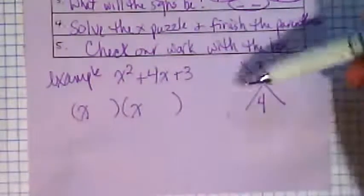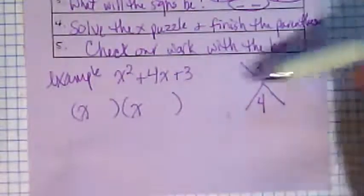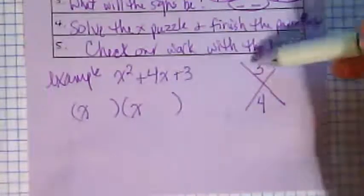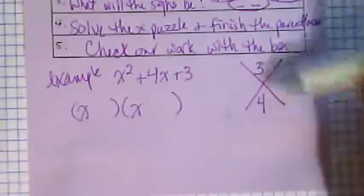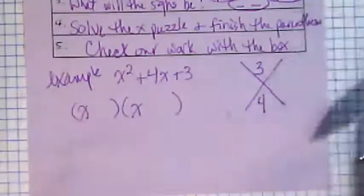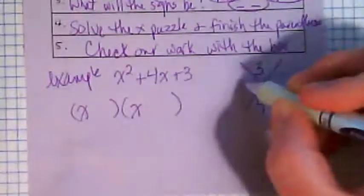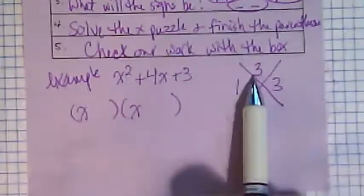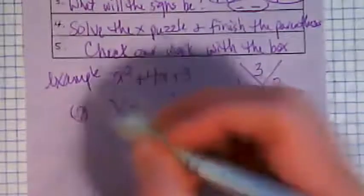it looks like we have everything positive because this is positive and this is positive. To solve the X puzzle, what we're going to look for here is what are two numbers that I can put on the sides of the X puzzle that when I multiply them, I get three, and when I add them, I get four. So I'm going to try one and three. When I multiply one and three, I get three. When I add one and three, I get four.